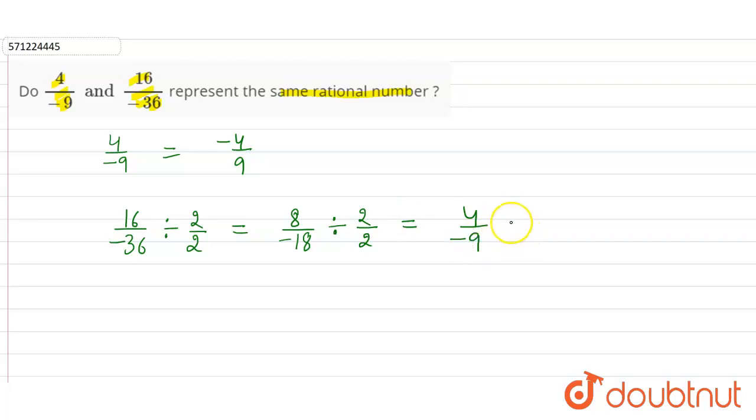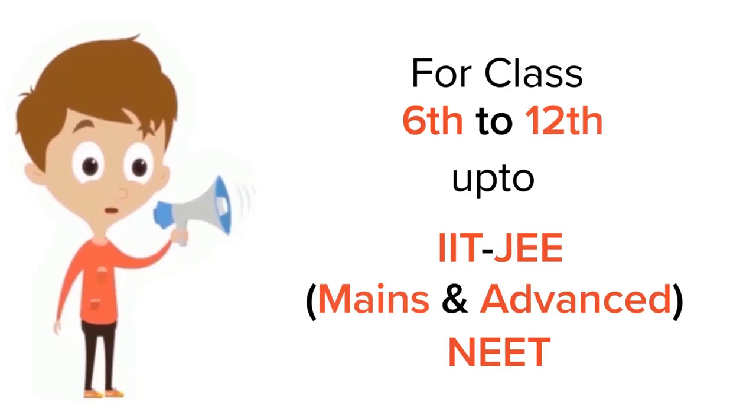So if you can observe, these two are representing the same rational number. For class 6 to 12, IIT-JEE and NEET level, trusted by more than 5 crore students.